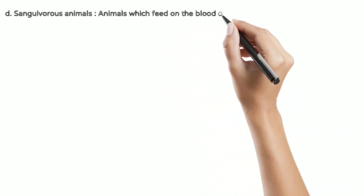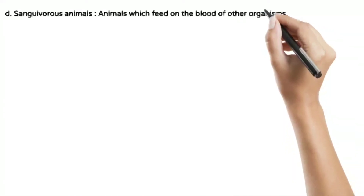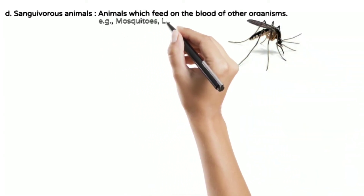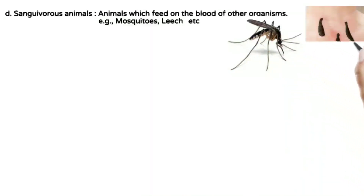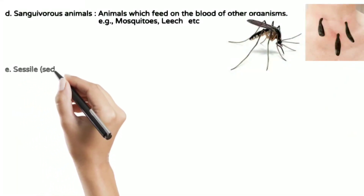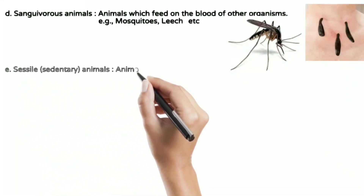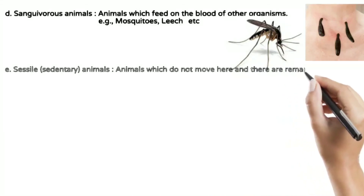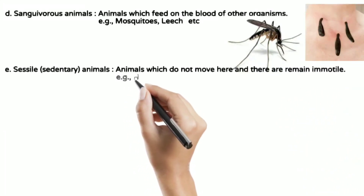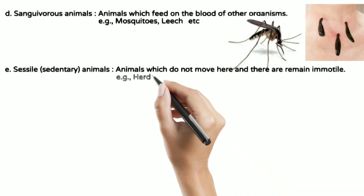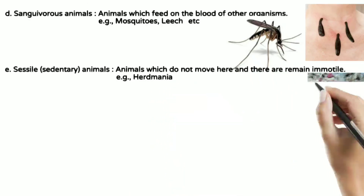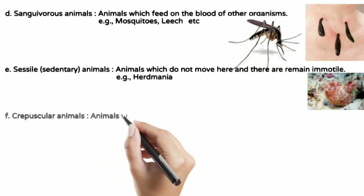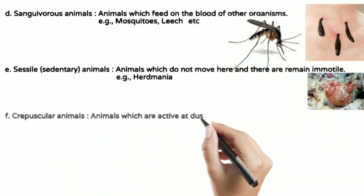Some animals feed on blood — like leeches and certain ectoparasites — and can survive on other animals. Sessile animals are those which do not move at all — an example is Herdmania.